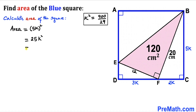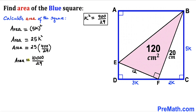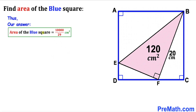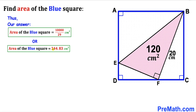We already determined that K² equals 400/29, so substituting: area equals 25 times 400 divided by 29, which gives us 10,000 divided by 29 centimeters squared. This can also be written as approximately 344.83 centimeters squared. That is our final answer.